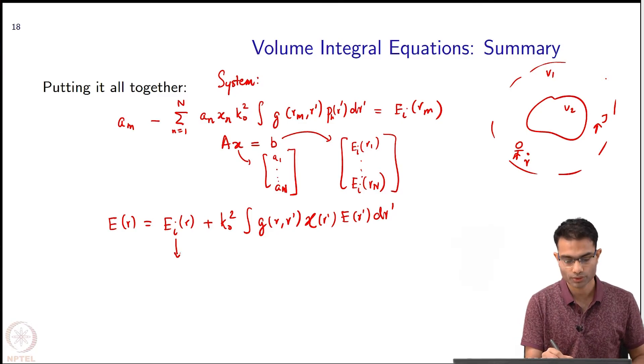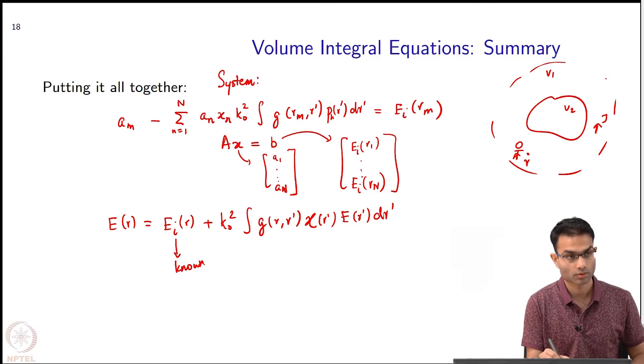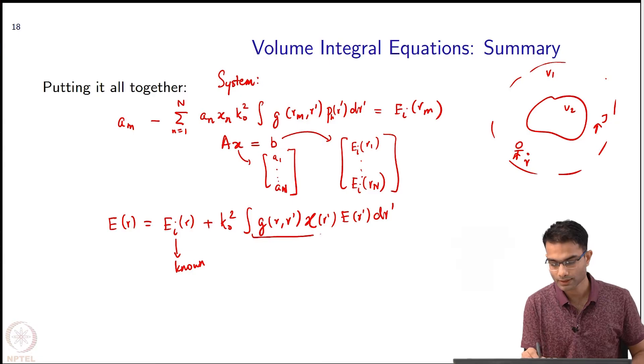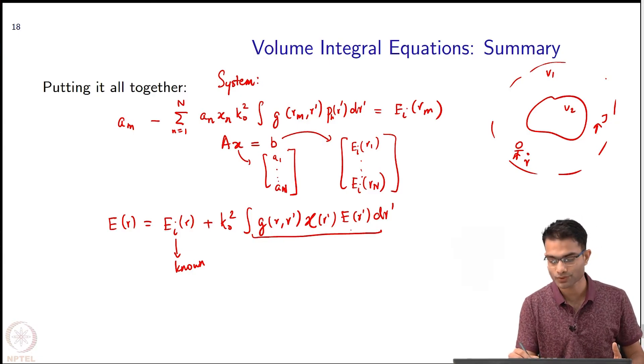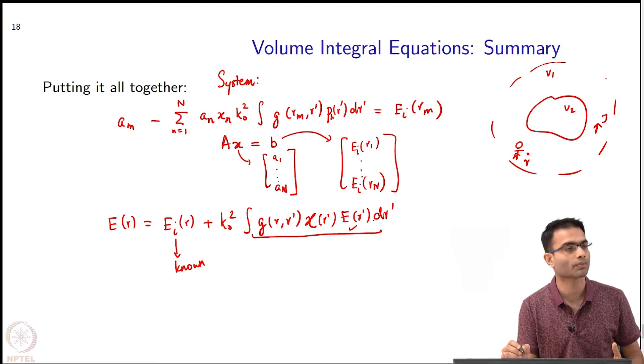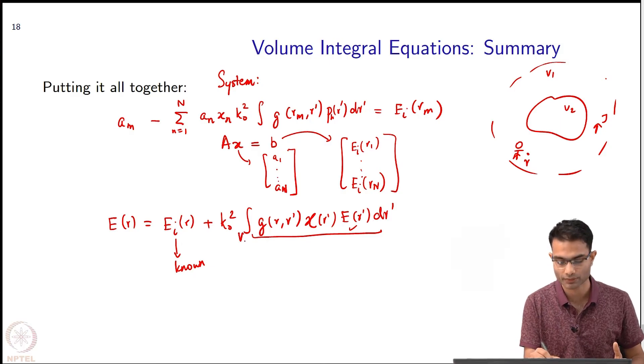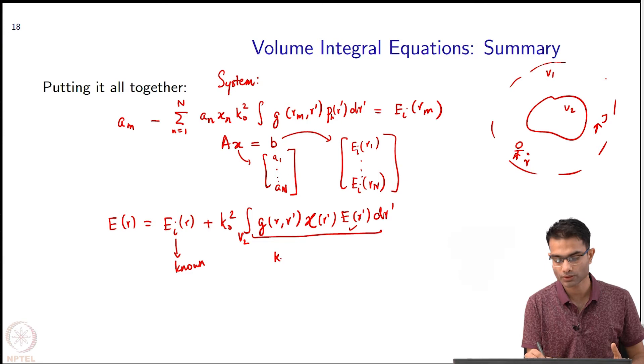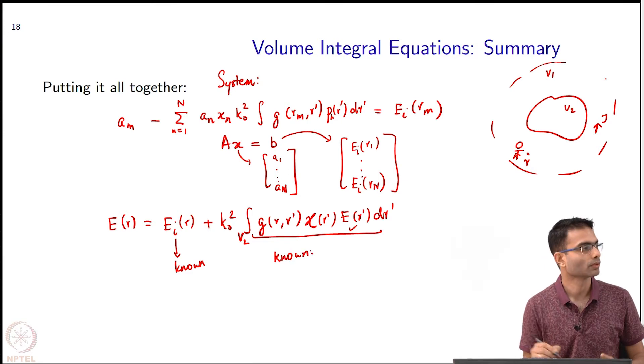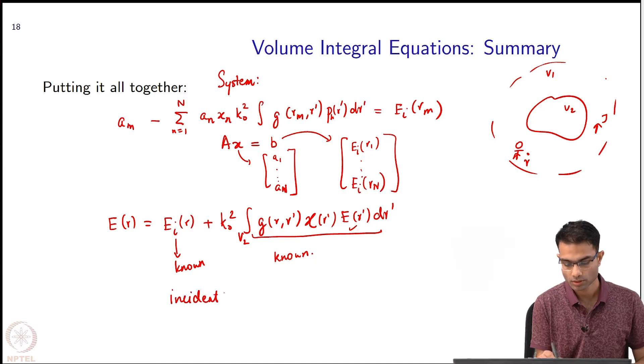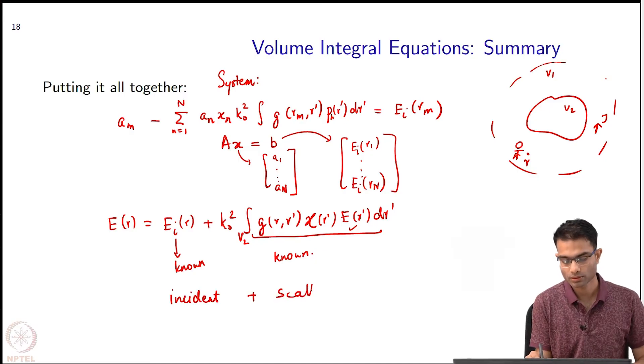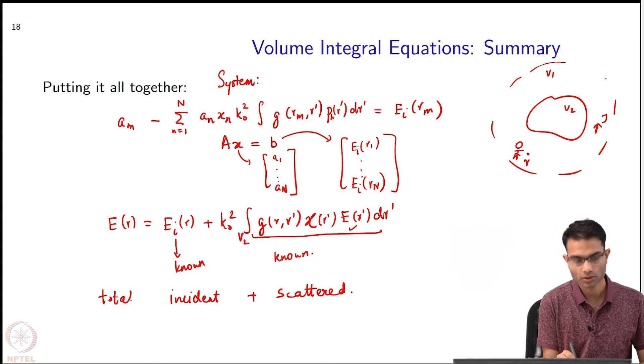Now, I know this, right? These integrals I know now. I know everything because in the previous step I have solved and I have got my E inside the domain. This integration was over V_2, so this whole thing is also known. What I have got is incident plus scattered is giving me total.